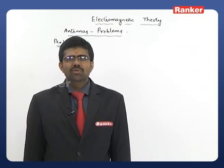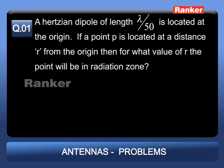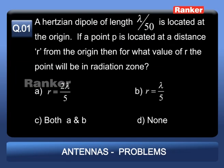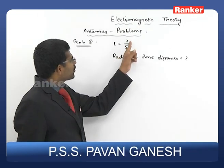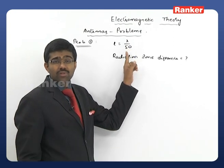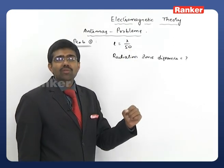Based on the previous concepts learned about antennas, we will solve a few problems. Problem 1: A Hertzian dipole of length λ/50 is located at the origin. If a point P is located at a distance r from the origin, at what value of r will the point be in the radiation zone? Option A: r = 2λ/5. Option B: r = λ/5. Option C: both A and B. Option D: none of the above.